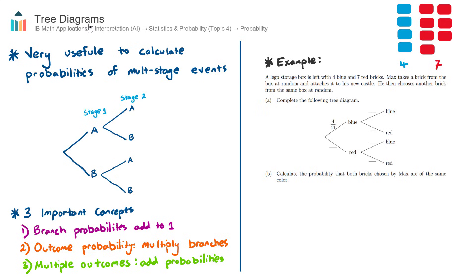Let's start the theory off with an example. As we work through this, we'll touch on why tree diagrams are beneficial and the important concepts to remember. In this example, we have a Lego storage box with four blue and seven red bricks. That creates a total of 11 bricks. Max takes a brick from the box at random and attaches it to his new castle.